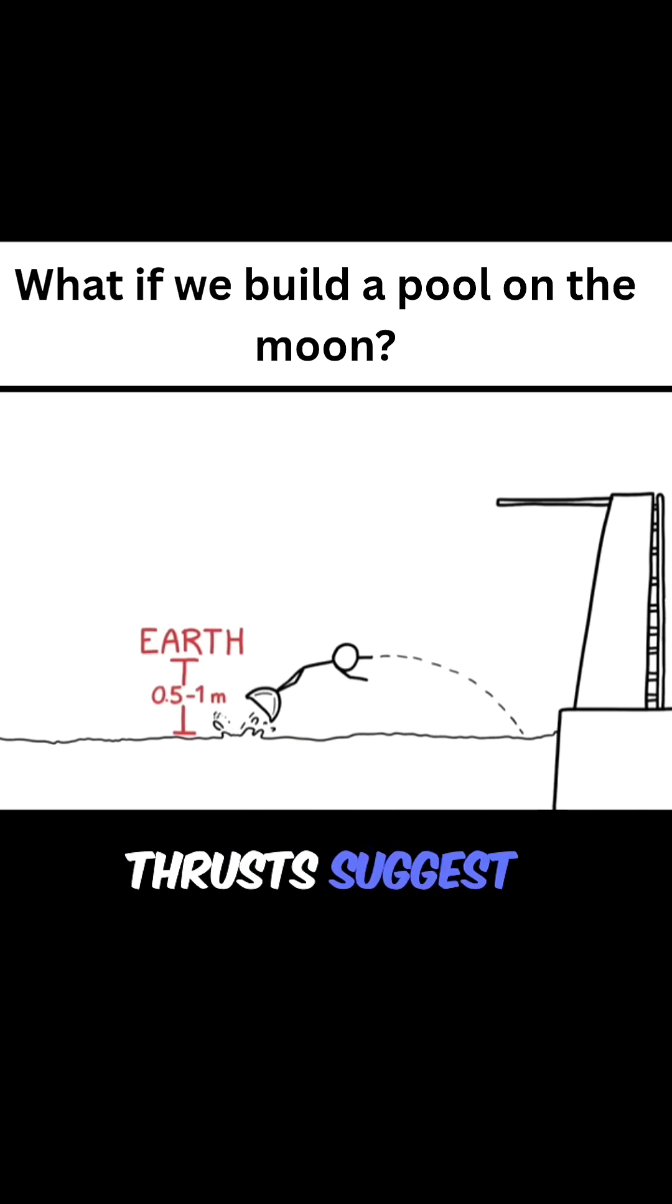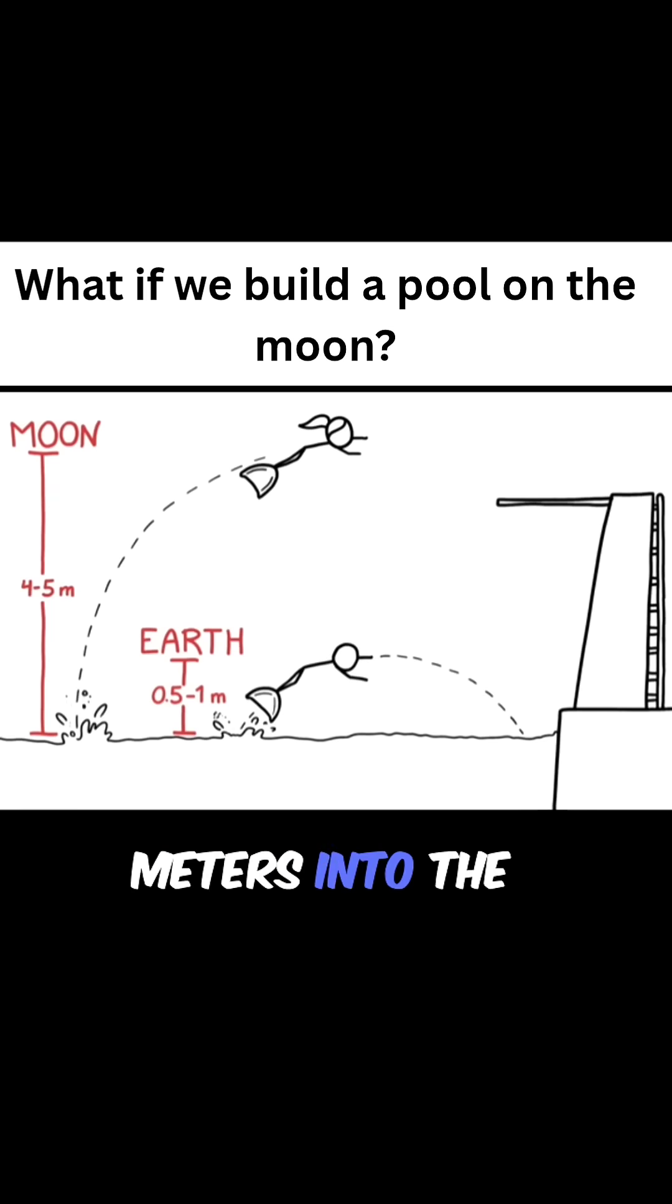Data on finswim top speeds and thrusts suggest that on the moon, a champion finswimmer could probably launch themselves as high as 4 or 5 meters into the air. It gets even better.